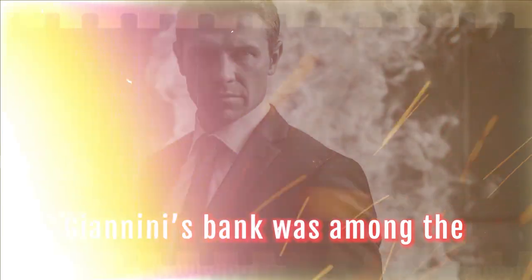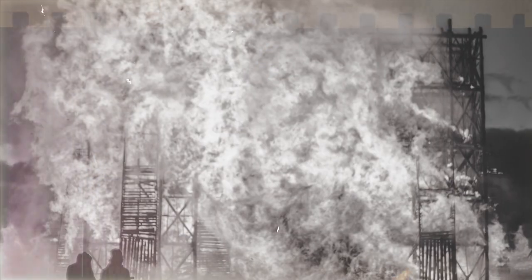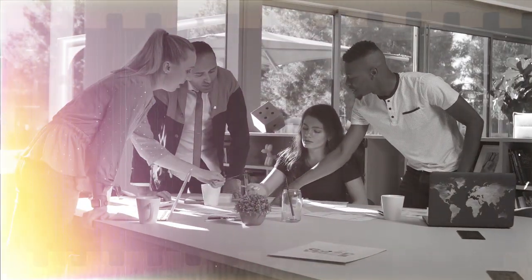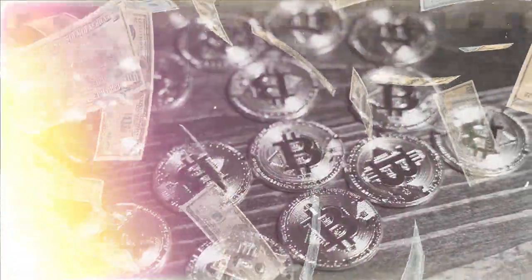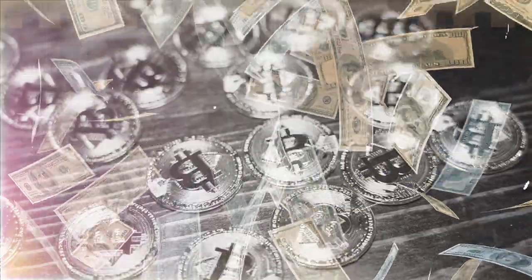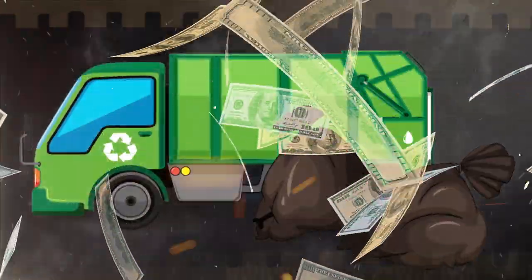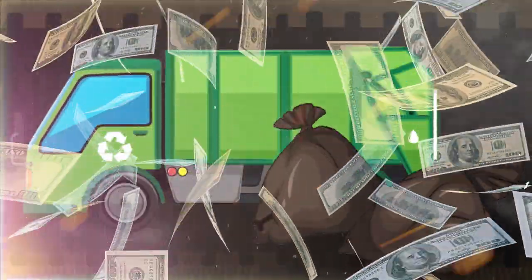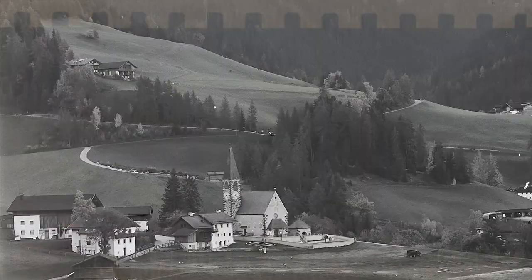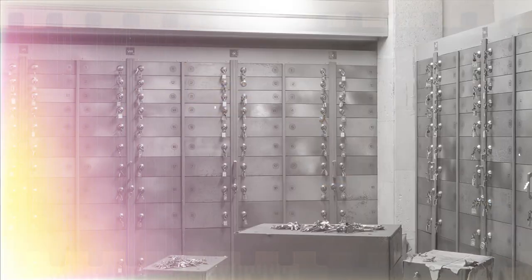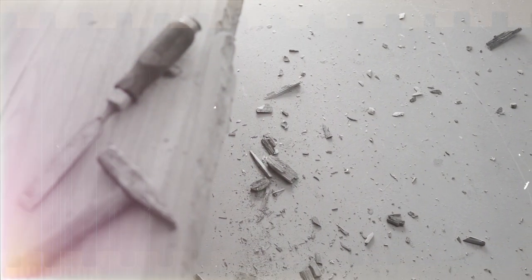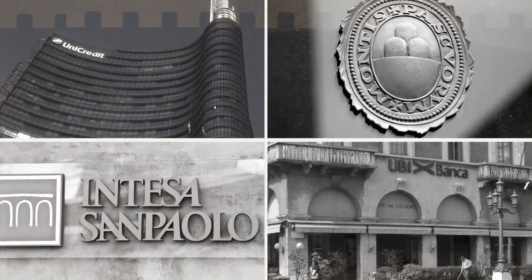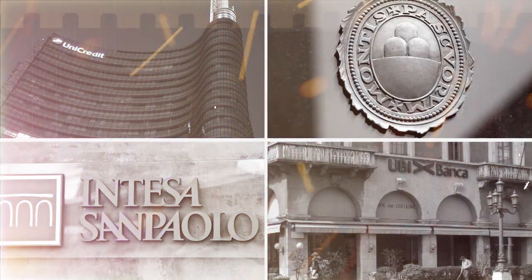Giannini's bank was among the buildings that were destroyed by the fire, but he did not give up hope. He gathered two of his employees and managed to salvage two million dollars in gold coins from the bank's vault before it was engulfed by flames. He hid the money in a garbage wagon and drove it through the chaotic streets until he reached a safe place outside the city. He set up a makeshift bank on a wharf near San Francisco Bay. He used a plank of wood as his desk and an orange crate as his chair. He hung a sign that read 'Bank of Italy' on his wagon.